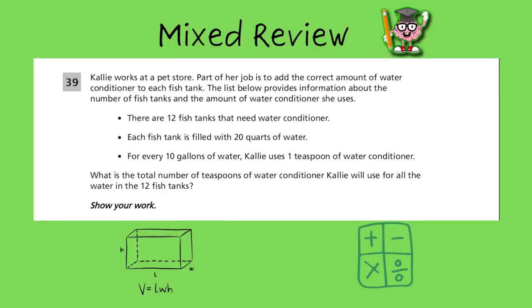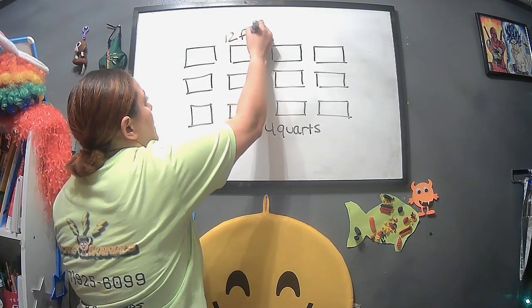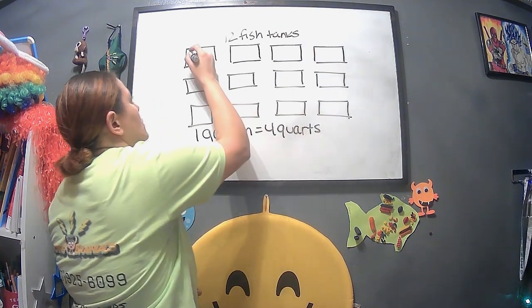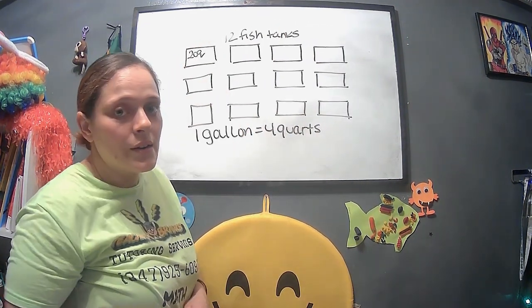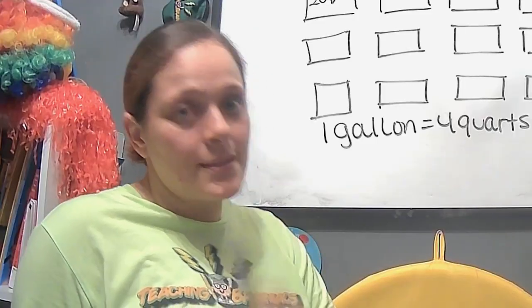Kaylee works at a pet store. Part of her job is to add the correct amount of water conditioner to each fish tank. The list below provides information about the number of fish tanks and the amount of water conditioner she uses. There are 12 fish tanks that need conditioner. Each fish tank is filled with 20 quarts of water. For every 10 gallons of water, Kaylee uses 1 teaspoon of water conditioner. The problem here is that not only do we hear quarts, but we hear teaspoons. We hear all kinds of units of measurement. So what do we have to do? You guessed it. You need a reference sheet.